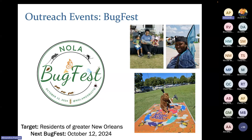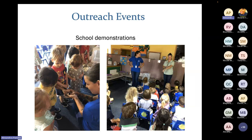We also host events. Our big yearly event is Bugfest — we had a really great turnout last year. It's a great way to get information about pests out to the community. Other city agencies like the Sewage and Water Board and Sanitation come out and give information. Our next Bugfest is October 12, 2024 — mark your calendars. It's a great outdoor and indoor event with lots of information, great for kids. We also do school demonstrations starting with pre-K all the way to undergraduate and graduate students — it's never too early to teach pest control.